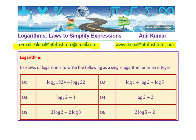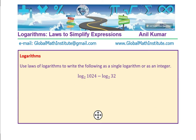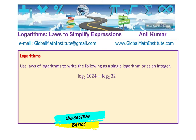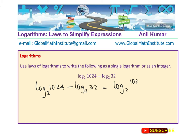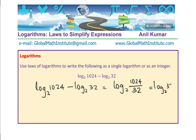Now let us take the solution of these questions one by one. Question number one: I hope most of you got the solution. Log base 2 of 1024 minus log base 2 of 32. You could write this as a quotient — log base 2 of 1024 divided by 32. What you get here is log base 2 of 32, and you can evaluate this.